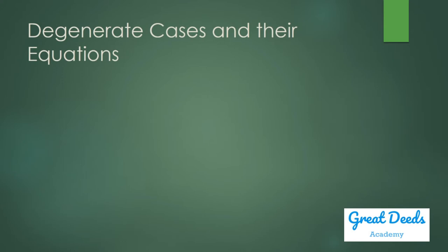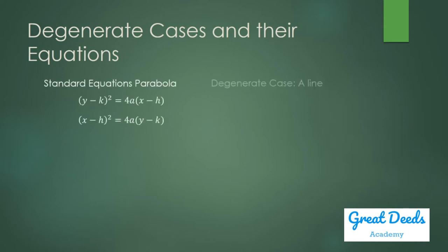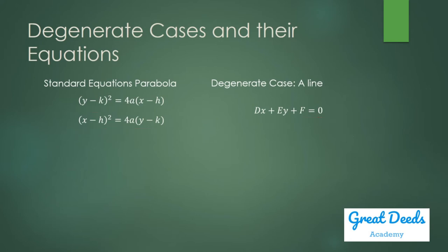Degenerate cases and their equations. These are the standard equations for our parabola. How might a degenerate case arise from the standard equation of your parabola? If you were to expand the binomial and combine similar terms, this is what you see. Then what you have here is an equation of a line — the terms containing x squared and y squared disappear. So you are looking at the degenerate case of a parabola, which is a line.